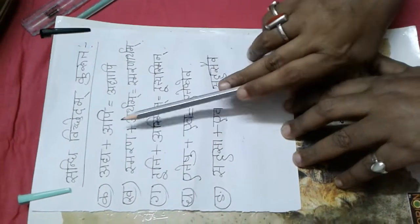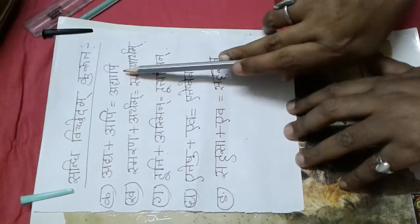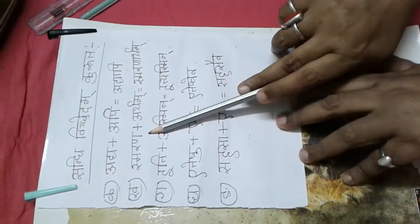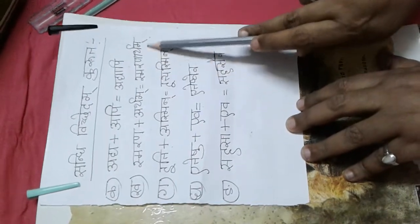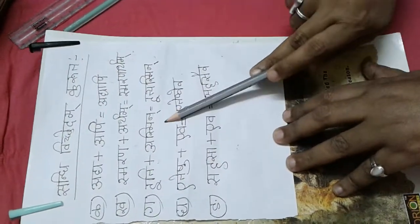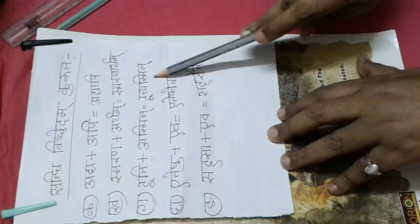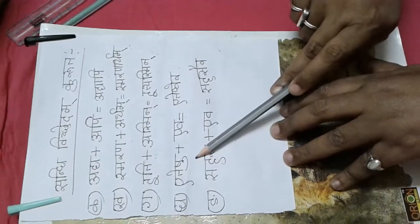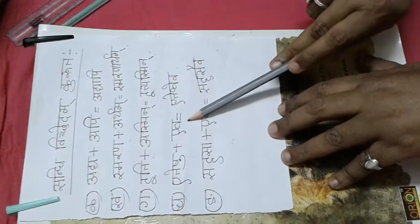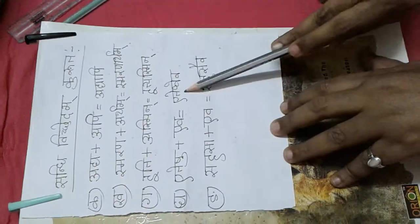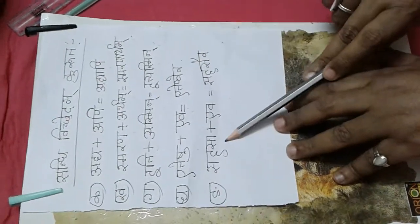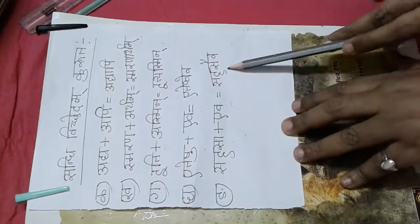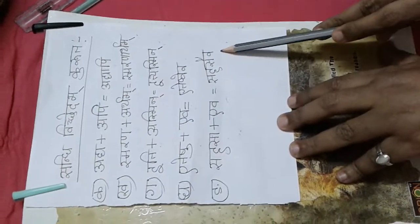Adya plus api gives adhyapi. Smarana plus artham gives smaranartham. Iti plus asmeen gives ittasmeen. Eteishu plus eva gives eteishvavyeva. Sahasa plus eva gives sahasaiva. Clear?